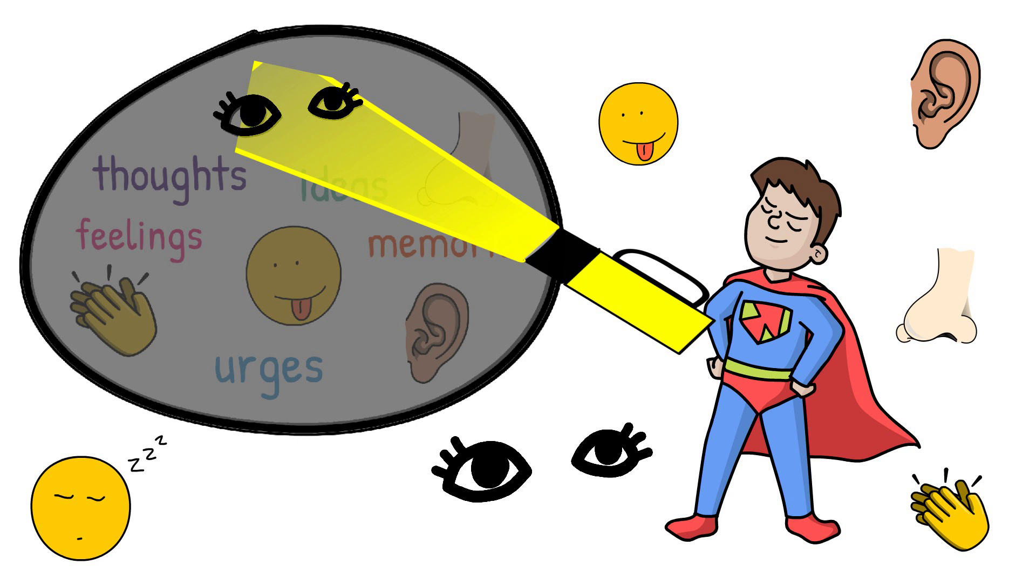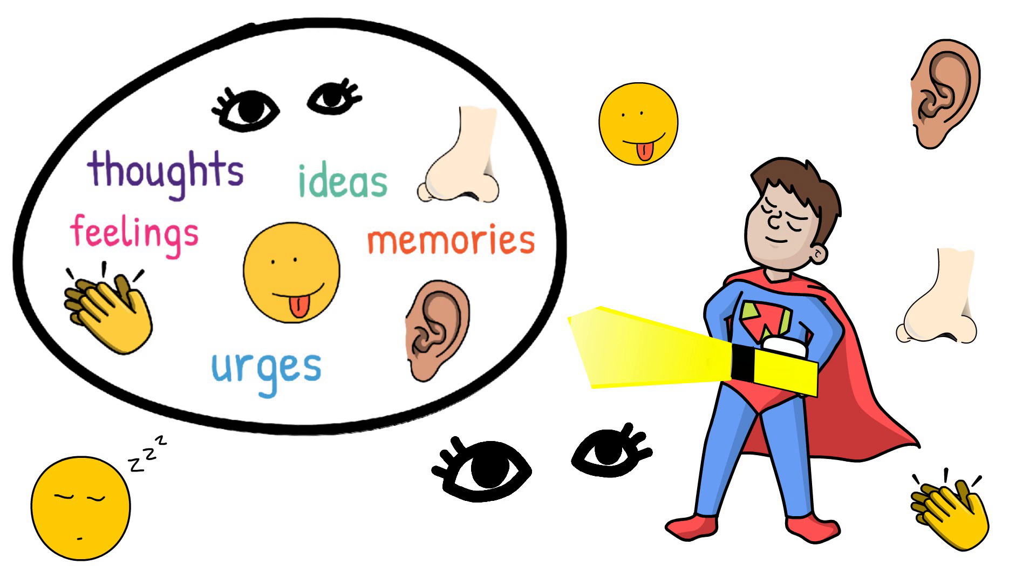We might still feel a bit worried but if we choose to take control of the torch we can choose where our attention is most useful. Then we have a much better chance of getting on with our day and doing the stuff that's important.